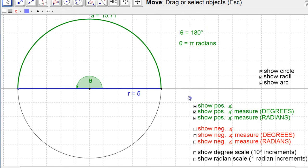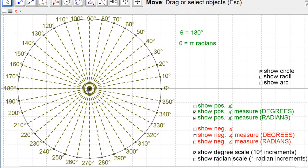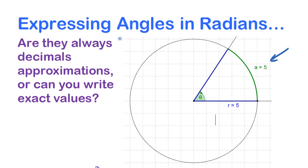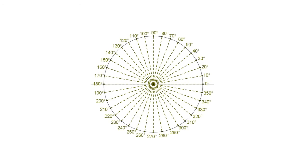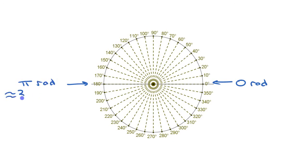Let's get a scale we can use, so let's turn off the angle, radii, and arc, and put a degree scale here. We have zero starting over here — zero radians — and over here is pi radians. You can say it's exactly pi radians, or approximately 3.14 radians. You can write it as a decimal or a fraction.